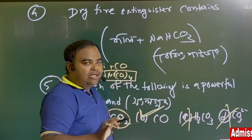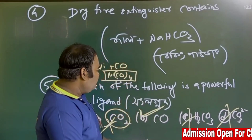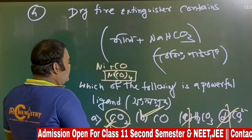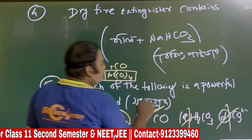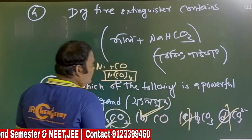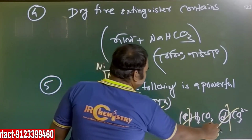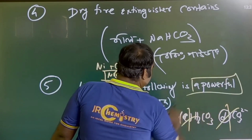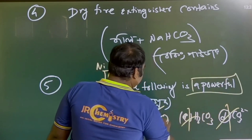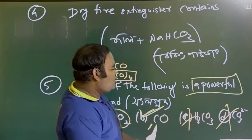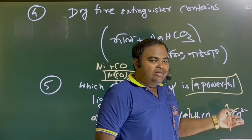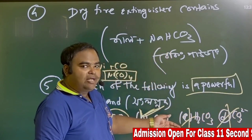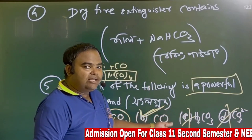CO₃⁻ will also bind — it is also a binding agent. However, when we compare the power of all of these, carbon monoxide will be the strongest. The reason is that CO₃⁻ will bind, but when the electron binds it will slide into the electron density.